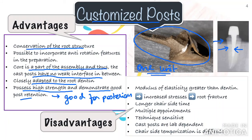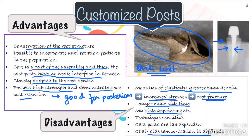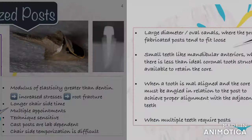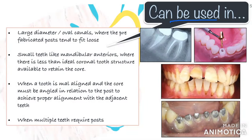Coming to the disadvantages: these posts are generally cast in alloy and therefore have a modulus of elasticity which is 10 times that of dentine. Because of this, it transfers functional stresses onto the dentine, which can ultimately result in endodontic or restorative failure. Also, the entire technique takes longer chair-side time and has to be completed in multiple appointments. Chair-side temporization is very difficult in these cases, so if a patient wants an immediate restoration, it may be a little difficult with a customized post. These are also technique sensitive and lab dependent, which may result in inaccuracies.